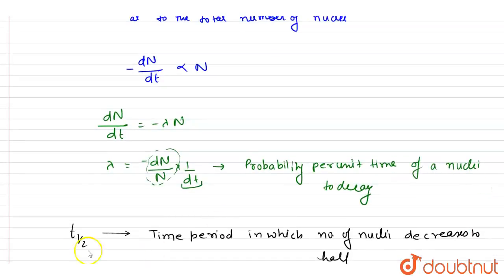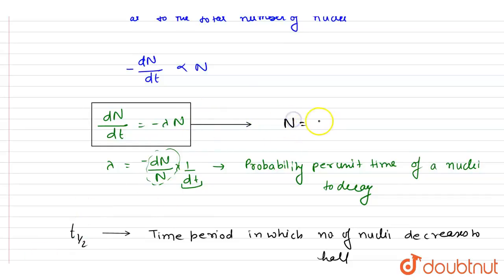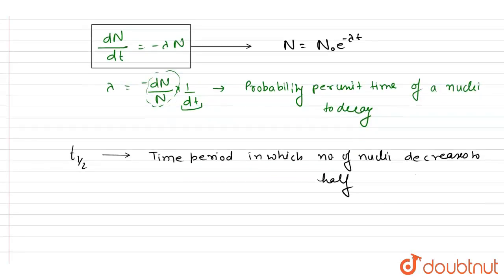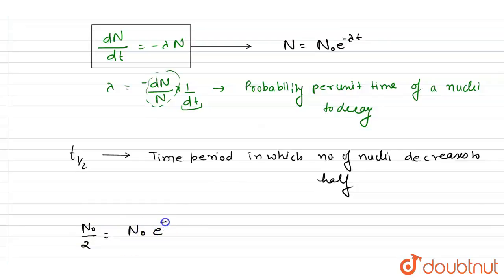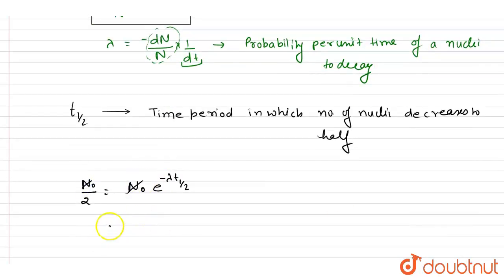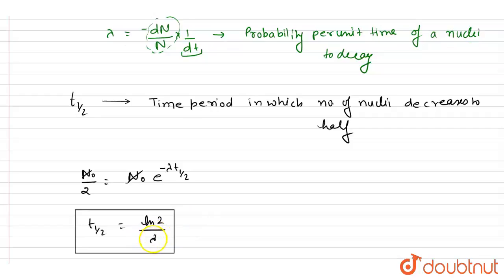By integrating the decay equation, we get that at any instant the number of nuclei present is N = N₀e^(−λt). To find half-life, we set N equal to N₀/2 at t = T½. The N₀ cancels out, and taking the log of both sides gives the relation between the decay constant and half-life: T½ = ln2 / λ.